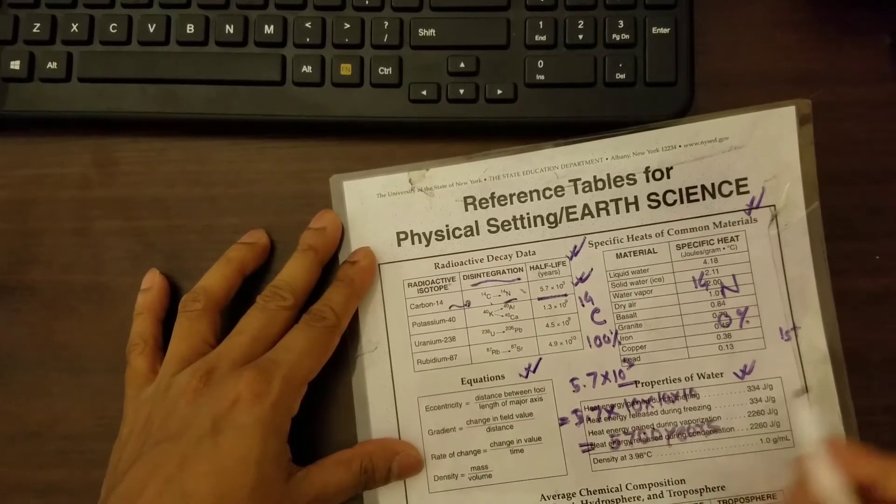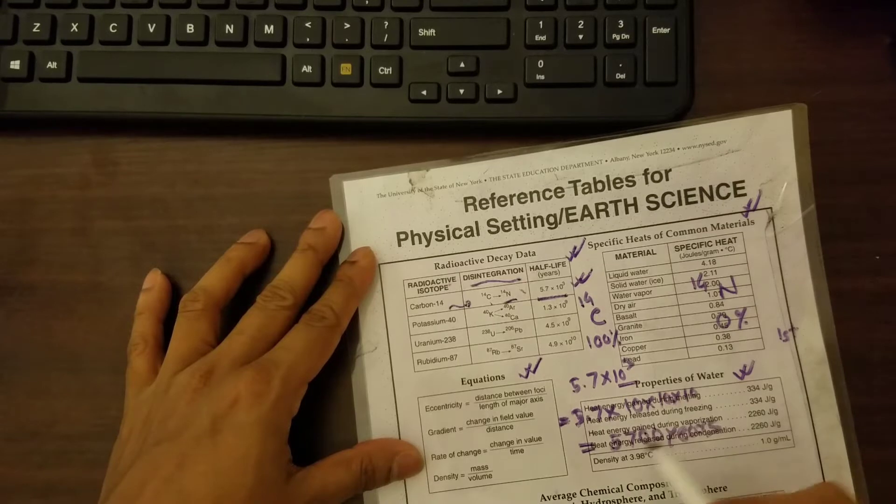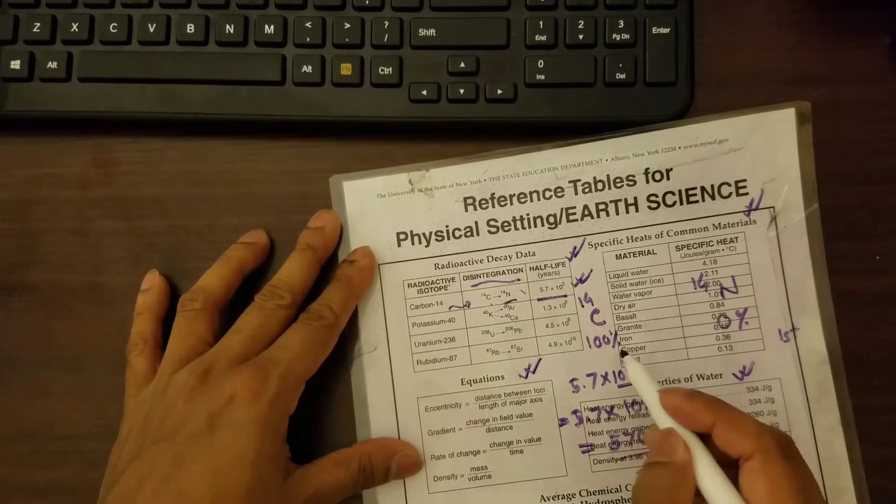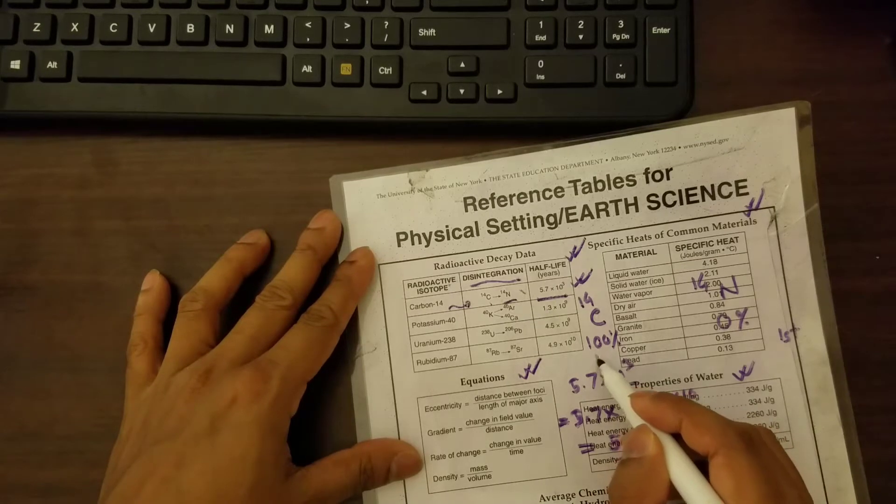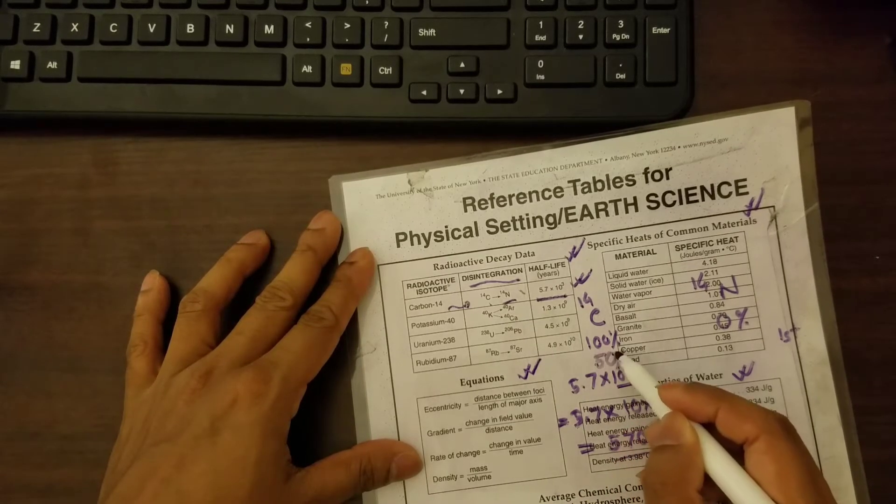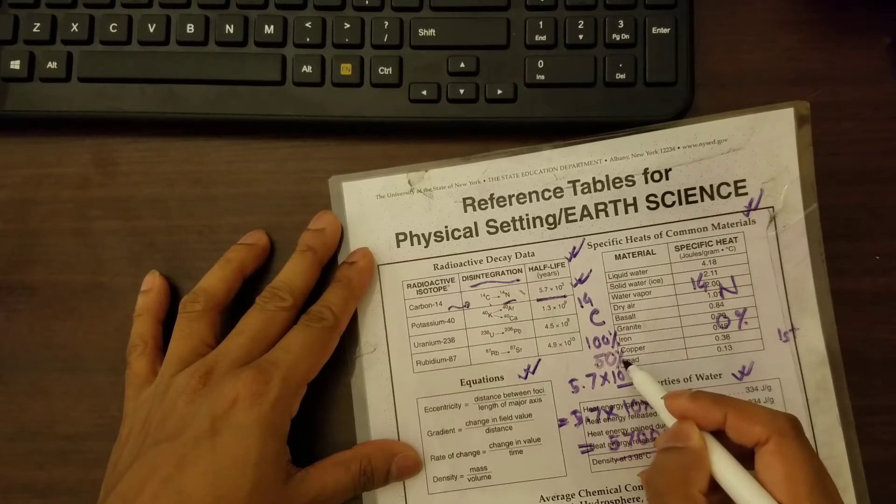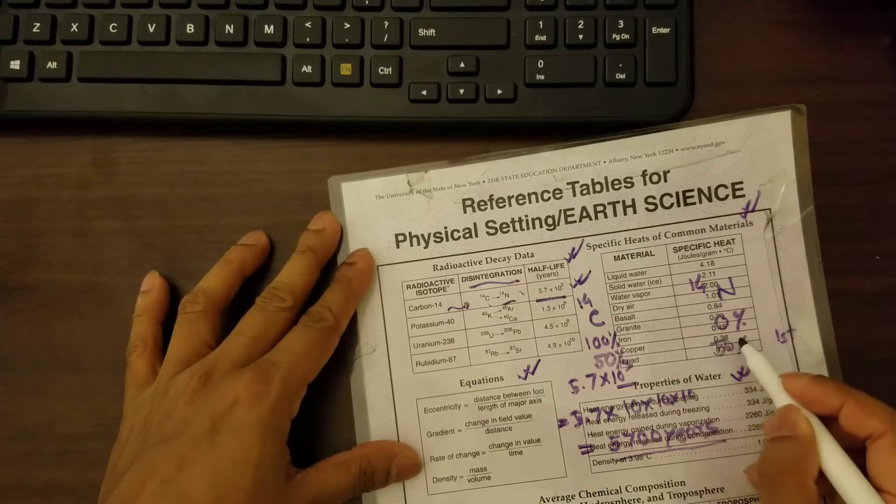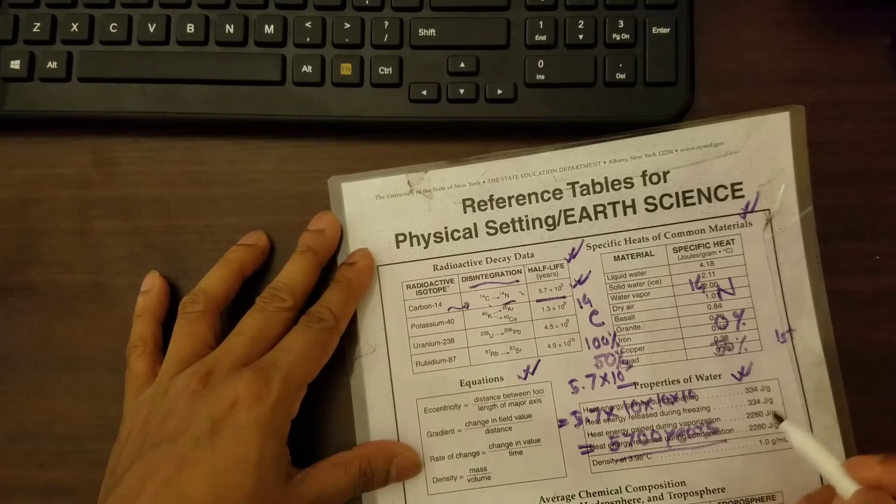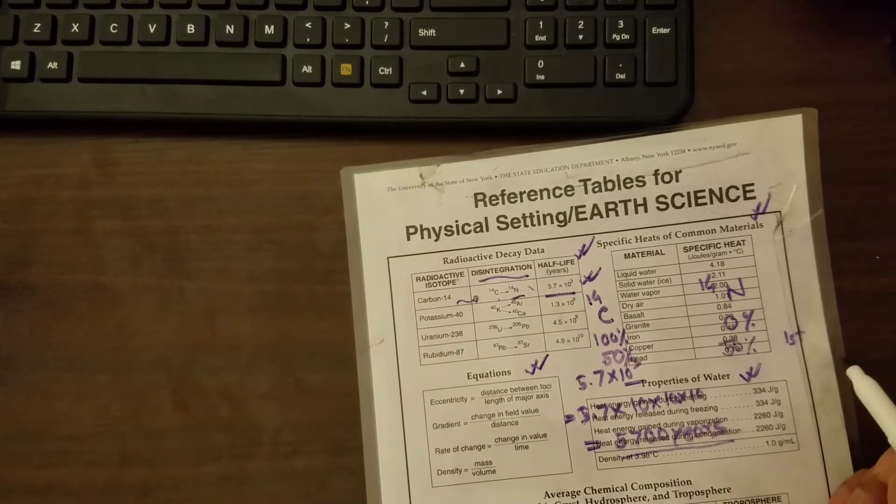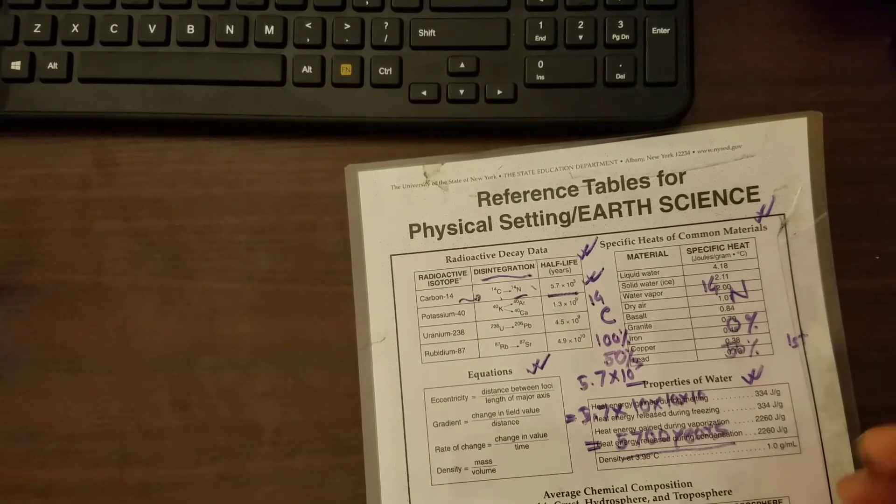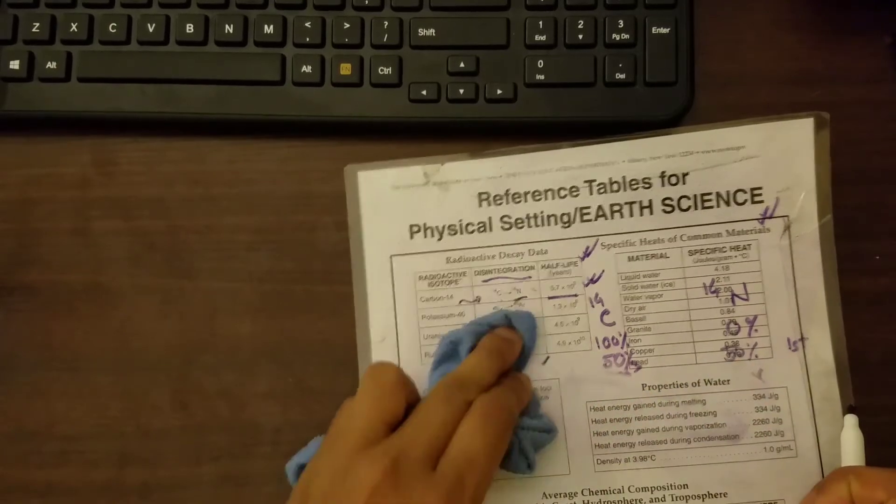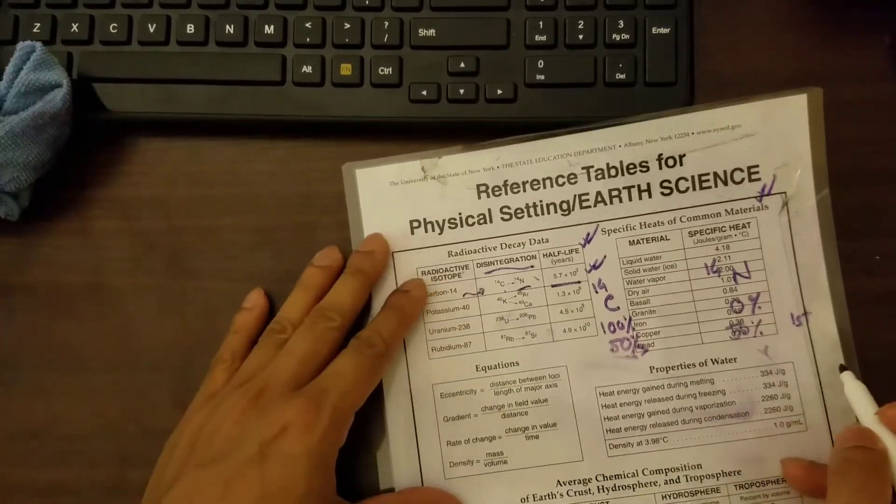That means after 5,700 years, 50% of the carbon will lose its radioactivity and 50% will become non-radioactive element nitrogen. So that's after the first half-life.